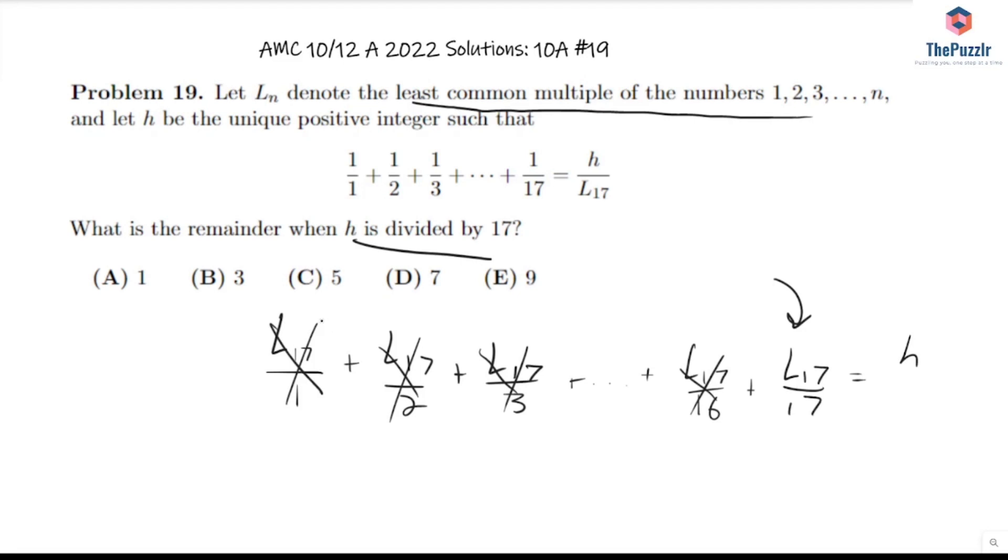Okay, so what is L_17? We don't have to compute the whole number, but just in terms of its factors. Well, what's the highest power of 2 that L_17 contains? So L_17 contains 16, highest power of 3 is 9, then 5, 7, 11, 13. And we would also have a 17, but we're dividing by 17 so this cancels out. And we need to find this mod 17.